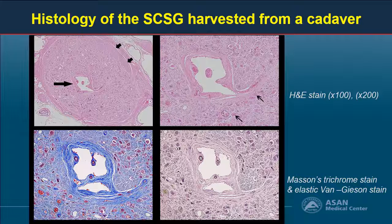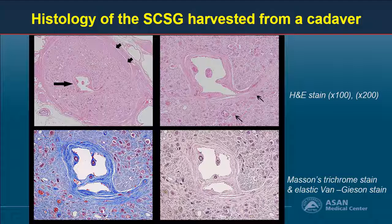Histologic examination of a harvested SCSG from an adult cadaver showed an SCSG with an axial diameter of 4.5 mm, encapsulated by thick connective tissue and containing a central vascular structure with a diameter of 0.6 mm, which was confirmed as a vein on elastic stain.